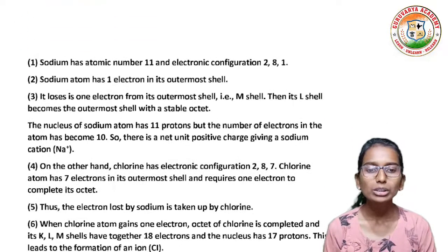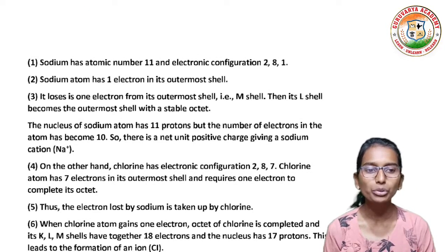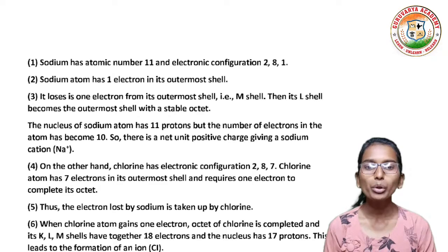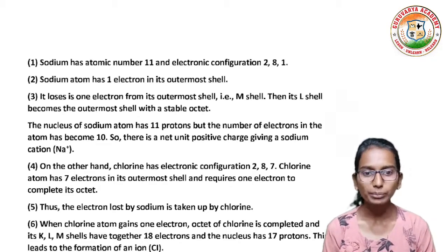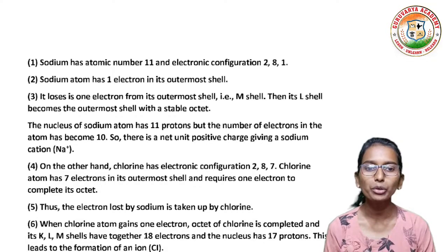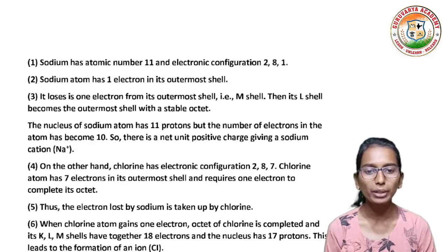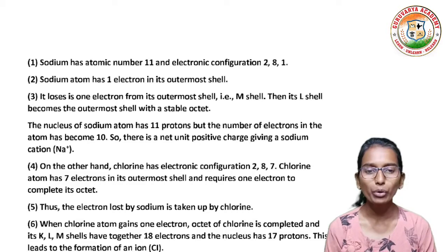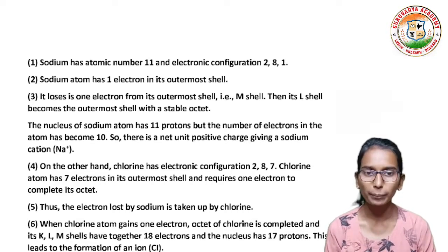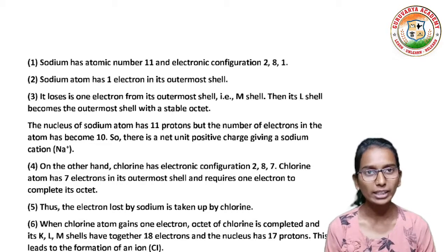Sodium has atomic number 11 and electronic configuration 2,8,1. Sodium atom has one electron in its outermost shell. It loses its one electron from its outermost shell — the M shell — then its L shell becomes the outermost shell with a stable octet. The nucleus of sodium atom has 11 protons but the number of electrons has become 10. So there is a net unit positive charge, giving a sodium cation, Na+.